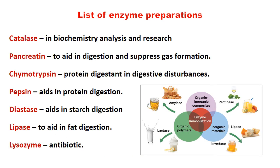A list of enzyme preparations from glands: catalase most common in biochemical analysis and research; pancreatine to help in digestion and suppress gas formation; chymotrypsin for protein digestion and digestive disturbances; pepsin aids in protein digestion; diastase aids in starch digestion; lipase to aid in fat digestion; lysozyme as an antibiotic.